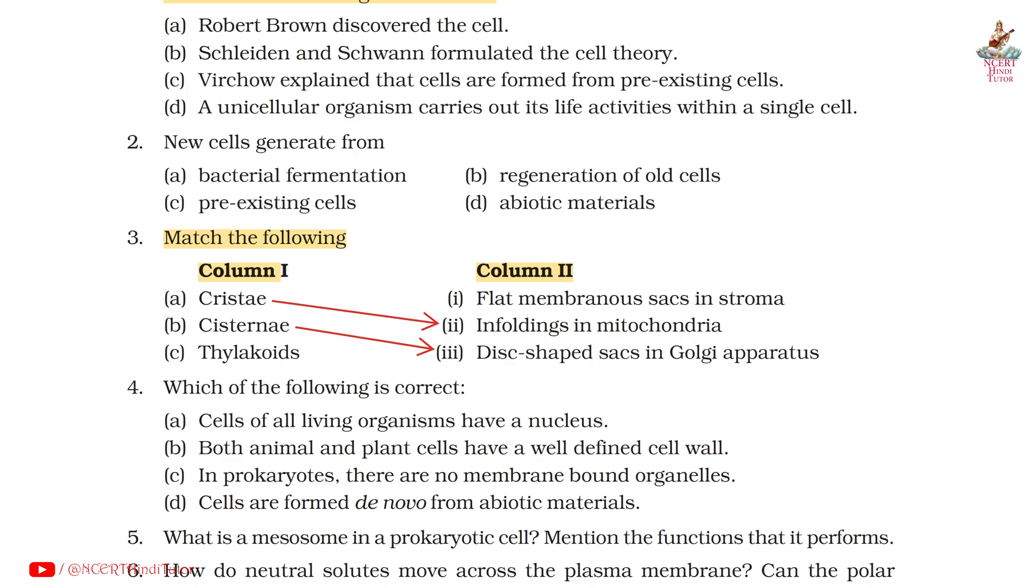C. Thylakoids – 1. Flat membranous sacs in stroma. So friends, you can match them accordingly. Now let's move forward.